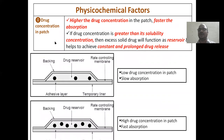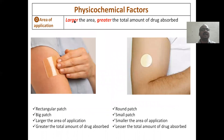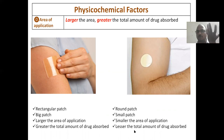Physicochemical factors: First, drug concentration in the patch. Low drug concentration means slow absorption. High drug concentration means faster absorption — higher drug concentration in the patch, faster the absorption. Second, area of application: small patch means small surface area and lesser drug absorbed. A larger rectangular patch means larger area of application and greater total amount absorbed.